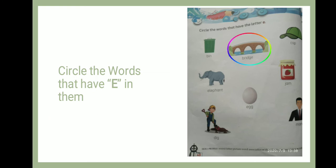Now the third is cap — C, A, P — cap. So kids, in this word we also do not find letter E, so we will not circle this picture. Now come to the next: elephant — E, L, E, P, H, A, N, T — elephant. So here we found the letter E, so we circle elephant like this.